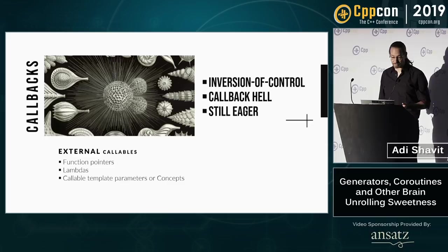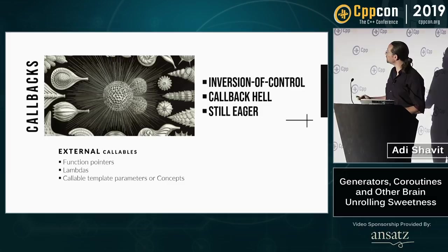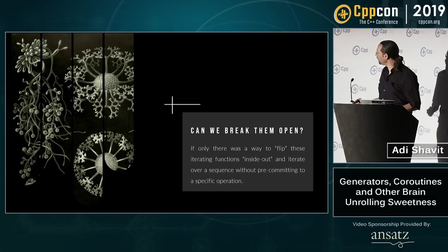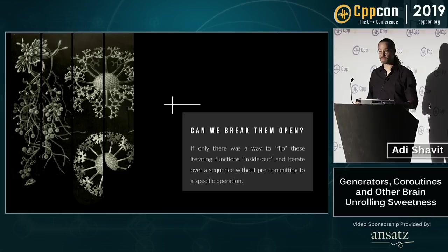Even when we're using callbacks, our code is still eager — it still wants to process the whole sequence before finishing. So if only there was a way to sort of flip these functions inside out and iterate the sequence without pre-committing to a specific operation.